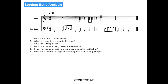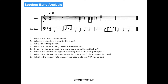What is the pitch of the highest sounding note in the bass guitar part? Scanning the score, the highest note is in bar 3, on the top line — and the note is A. What is the pitch of the lowest sounding note in bar 3 of the bass guitar? The lowest sounding note is C. Which is the longest note length in the bass guitar part? The longest note length is the half note, which is 2 counts. Name the chord in the guitar part in bar 2 — the notes are G, B, D — it's a G major chord.